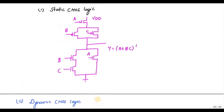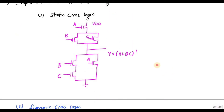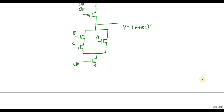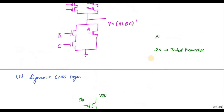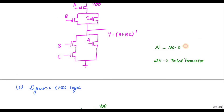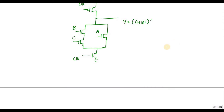If the number of transistors in the NMOS logic is N, then the total number of transistors is N + 2. So here, if the number of inputs is N = 3, you have N + 2 = 5 transistors total. In general, for dynamic CMOS with N inputs, the total transistor count is N + 2.